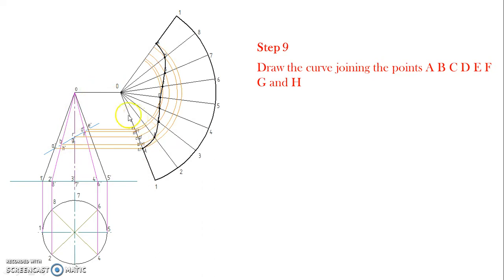Then join all these points A, B, C, D, E, F, G, H and again A by the smooth curve in order to obtain the development of cone when it is cut by this cutting plane. This dark curve or this dark portion is showing the uncut surface of the cone when it is developed.